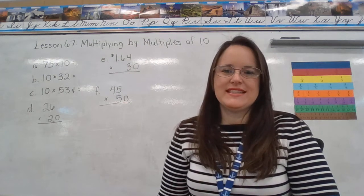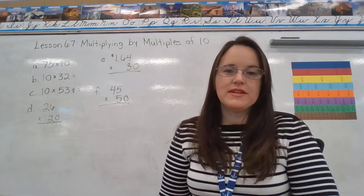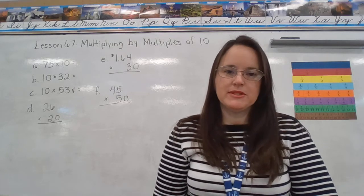Today we are on lesson 67 of Book 4, Saxon Math. Today we're going to talk about multiplying by multiples of 10.